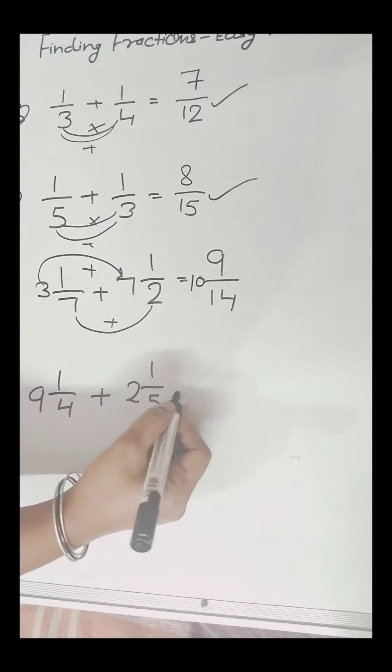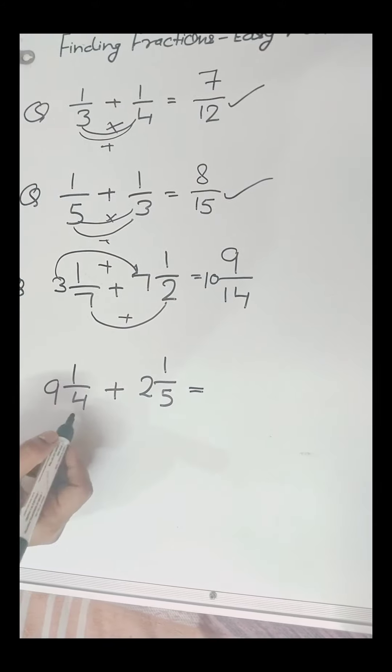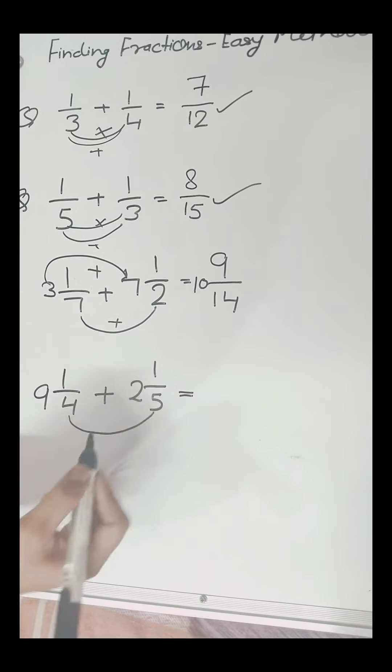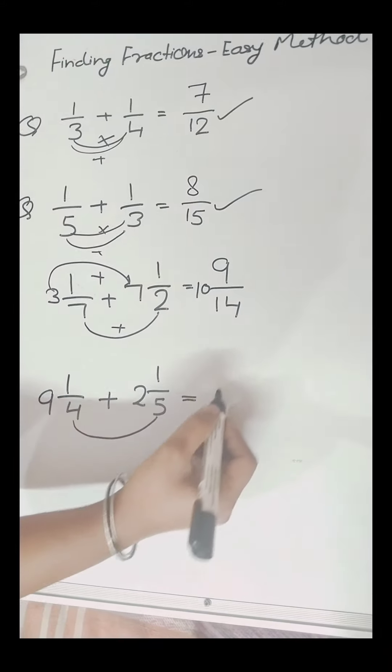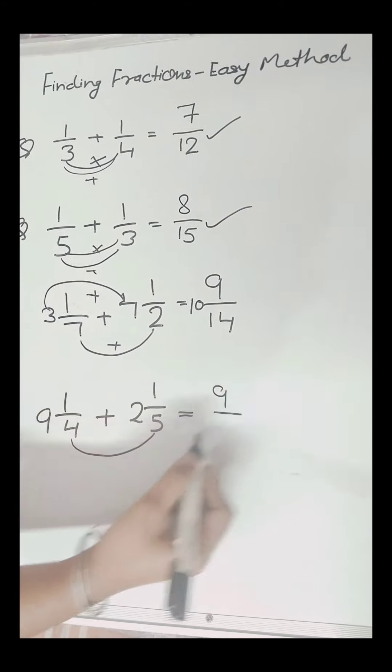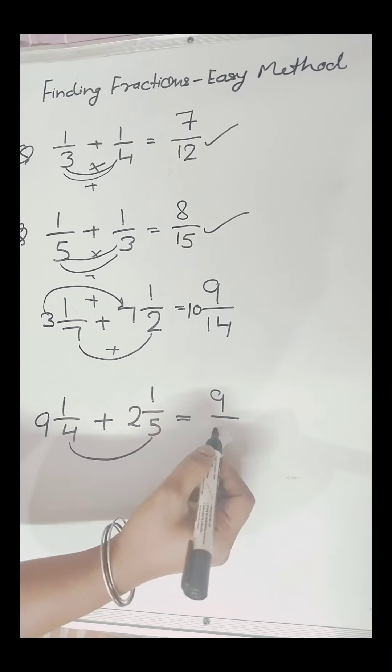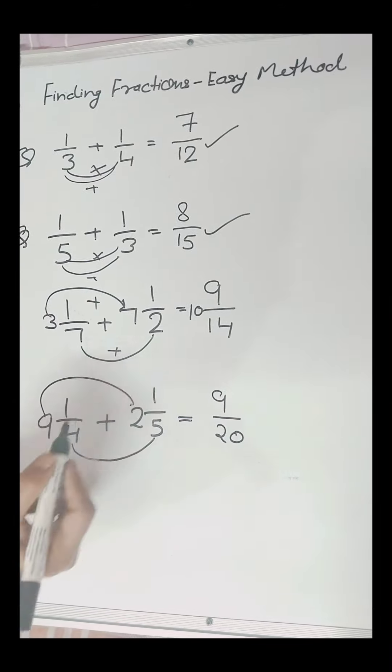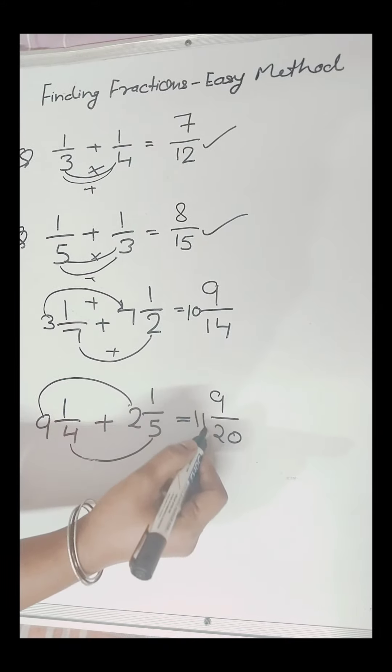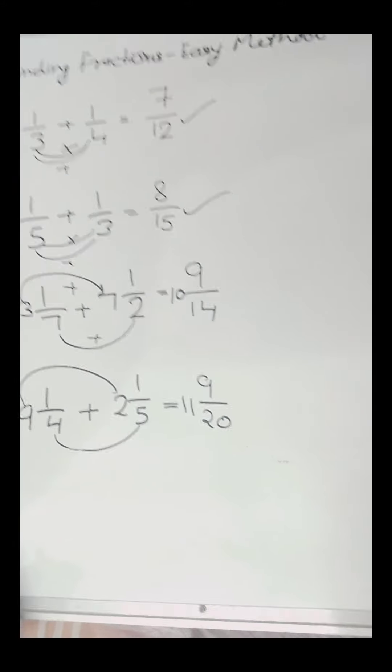Using the same method, we will solve this next mixed fraction. We will add 5 and 4 which equals 9, and multiply them which equals 20. Now, we will add 9 and 2 which equals 11. So the answer is this.